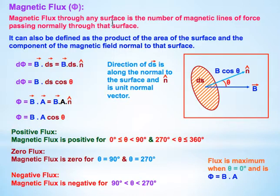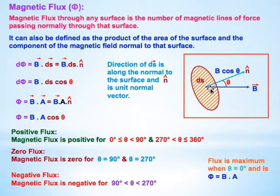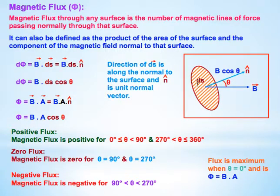What does this definition mean? If we take a surface and place it in a magnetic field, the magnetic lines of force pass through that surface. Magnetic flux through any surface is the number of magnetic lines of force which pass normally through that surface. Mathematically, we get flux φ = B · dS, where this is the dot product.